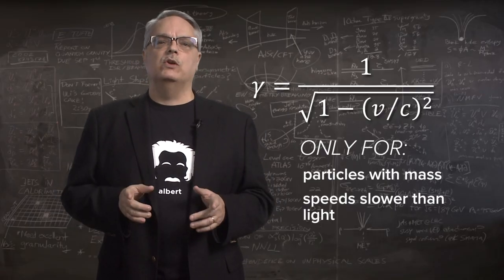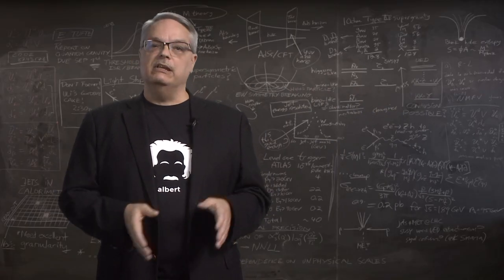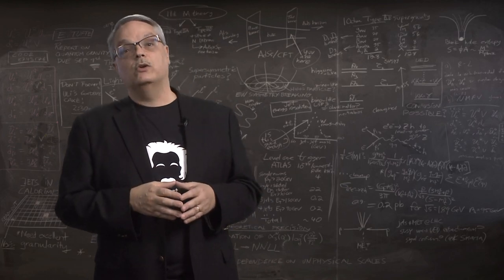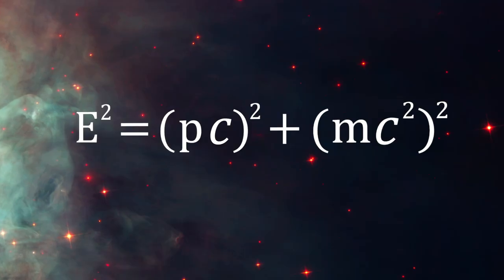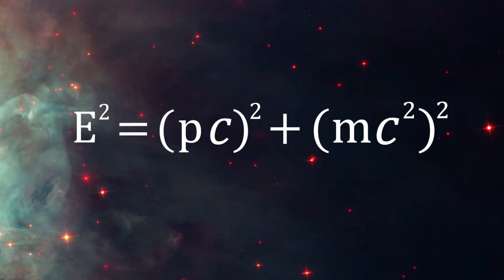Now there is another equation that applies universally for both particles with and without mass. And that equation is here. It is E squared equals P times C, all squared, plus MC squared, again, all squared.